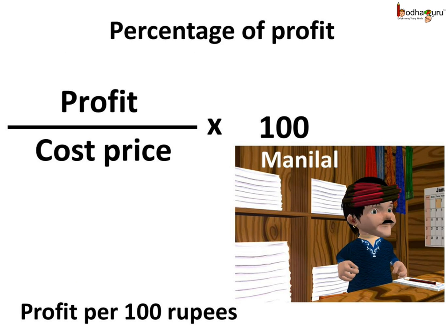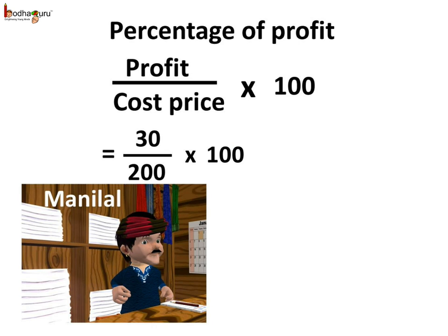As people may spend different amounts and may get different profits, we calculate the percentage of profit — that is, how much profit would a person make if he had spent rupees 100, meaning the cost price was rupees 100. As we are finding the percentage against the cost price, we divide profit by cost price. The formula for percentage of profit is profit divided by cost price multiplied by 100. This is profit per 100 rupees, and we call it the percentage of profit. When we say percentage, we mean per 100.